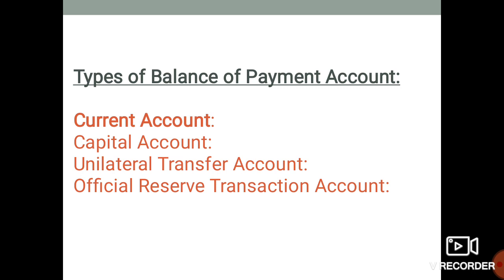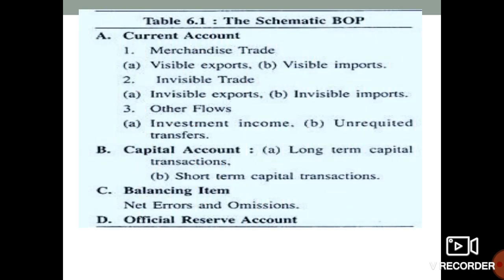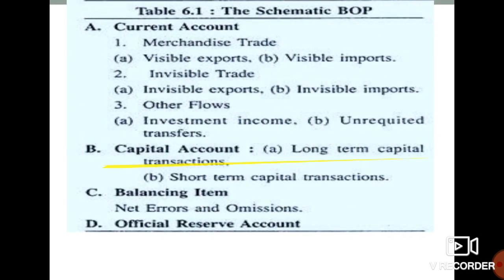The current account is defined by three parts. The first is visible imports and exports of goods. The second is invisible trade in services. The third covers other flows. Current account is related to these three items.